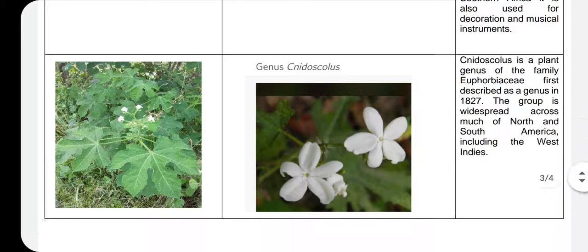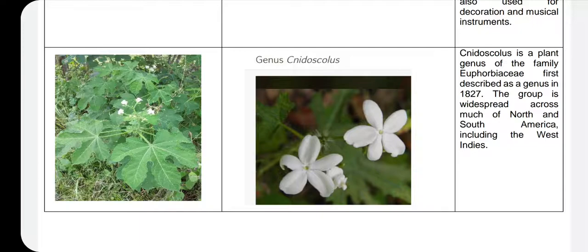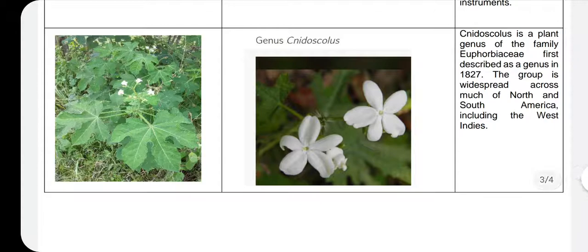I also went to the weeds in the cow field and found this plant. It was an Ortiga — I already knew that name — but the scientific name, the genus, is Urticaceae. I think it is the plant shown here; there are similarities between them.